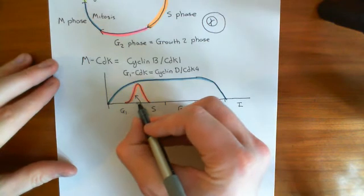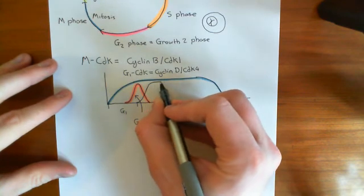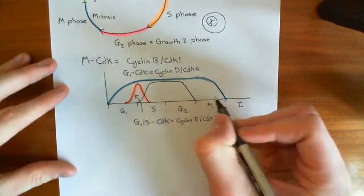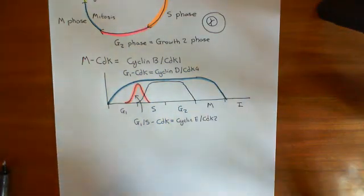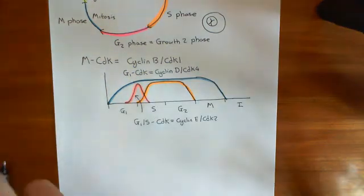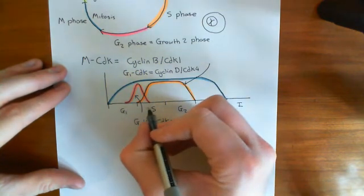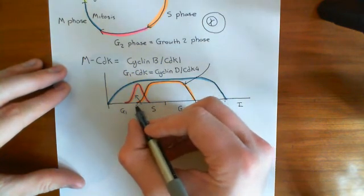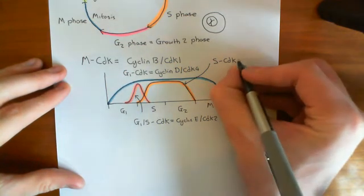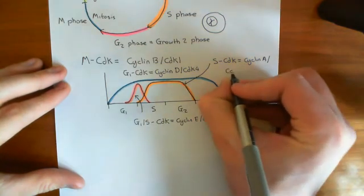As you go into S phase, the S cyclin-dependent kinase comes on, which starts the process of DNA synthesis. It remains high through G2 and then goes down as you approach M phase. This is the S CDK, or cyclin-A CDK2 complex. When you move from G1 to S, you activate the E2F transcription factors, which activate transcription of cyclin-A, which is what you need to make these S CDK enzymes.